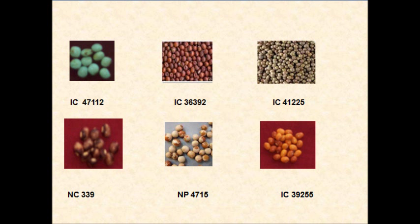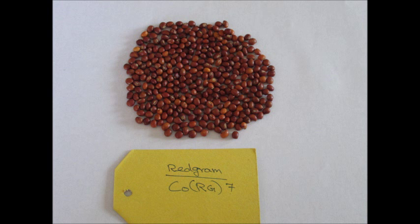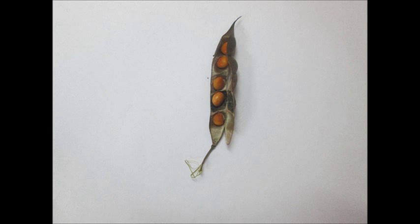The color of the seed ranges from silver, white, green, fawn, black, pink, or red to purple. Seed shapes are oval, pea-shaped, square, or elongate. The number of seeds per pod ranges from 2 to 8.